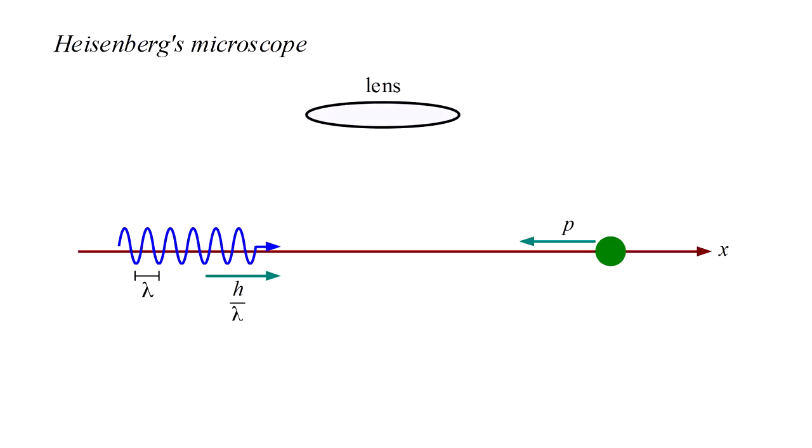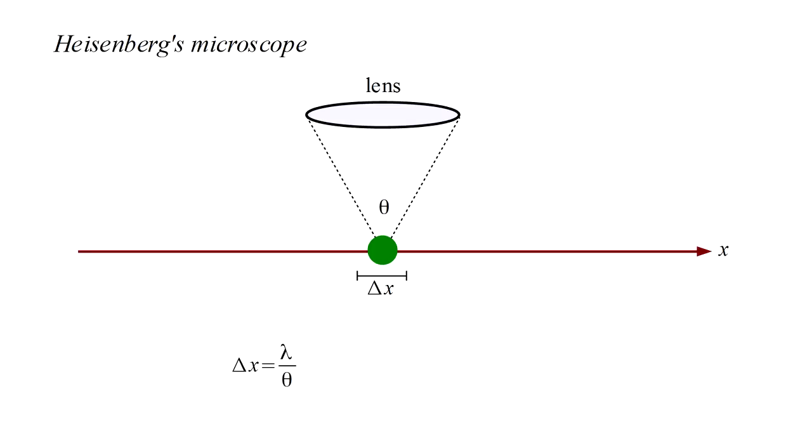We're going to determine the electron's position by imaging it with a lens. Optical theory tells us that if at the electron the lens covers an angle theta, then the position of the electron can be imaged with the resolution delta x, where delta x equals lambda over theta. We can make delta x smaller by making lambda smaller and or by making theta bigger.